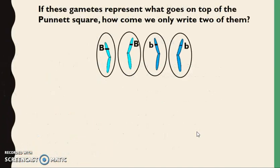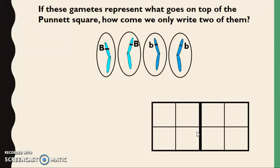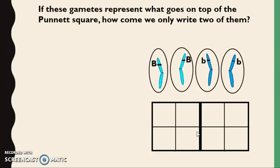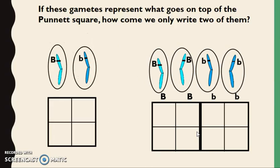If we look at Punnett squares, a tool used to make predictions or look at the probability of traits being inherited in offspring - if we make four gametes, how come we don't set up our Punnett squares with four? Because that would be redundant. We don't need to write the big B twice when it's just copying it a second time. Our Punnett squares represent Mendel's law of segregation that our alleles separate.